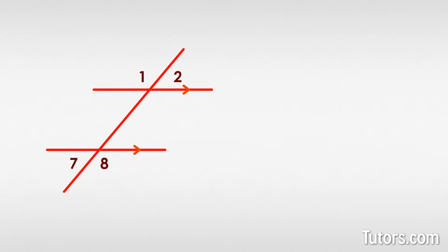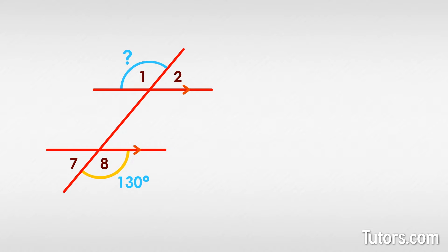Here is a drawing with parallel lines and a transversal. If we know that angle 8 measures 130 degrees, what is the measure of angle 1? Angle 8 is on the outside of the bottom parallel line and to the right of the transversal. That means angle 1 is its alternate exterior angle partner, so the Alternate Exterior Angles Theorem tells us that angle 1 is also 130 degrees.